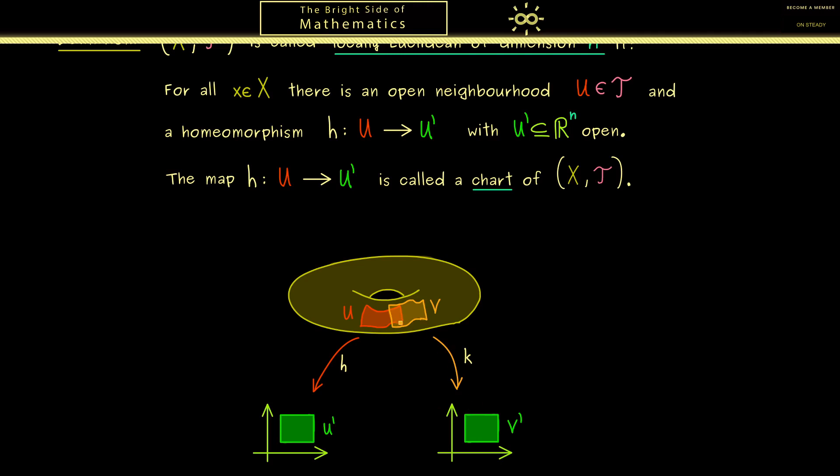And of course this gluing here is what we need to describe the overall structure of X. Now what you should see here is the description in U' and V' could be totally different, but on the overlap they should describe the same thing in X. In other words, we could ask what is the coordinate transformation here from the left-hand side to the right-hand side.